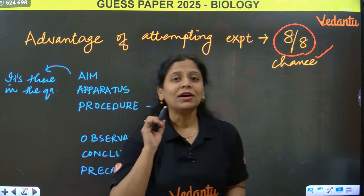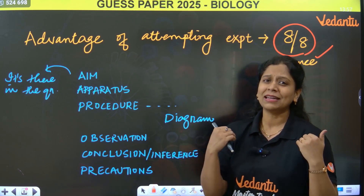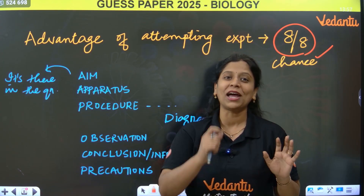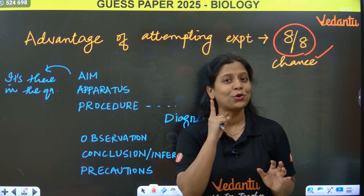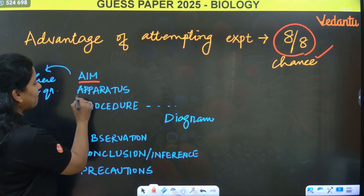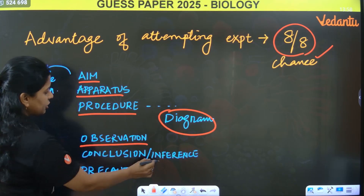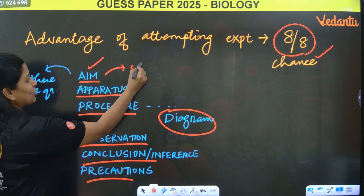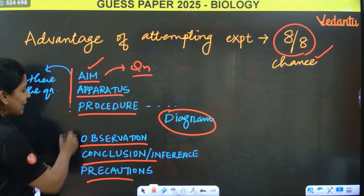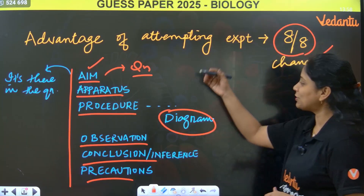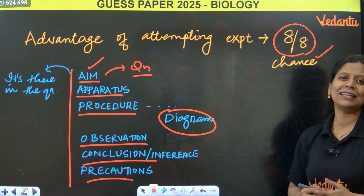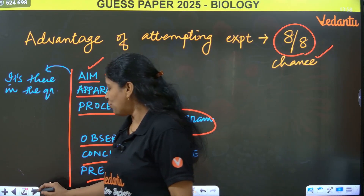Chances are high. If you write the experiment, you can easily score 8 by 8. Please attempt every question — don't leave any question unattempted. For an experiment question, just write: aim, apparatus, procedure, and related diagram, observation, conclusion, precautions. The aim is given in the question itself. Even if you don't know the experiment, please attempt it. Control and coordination — phototropism and chemical coordination in plants — this is a short 8-mark question for tomorrow's exam. Neuron structure, reflexes — may or may not be asked in 8 marks, but 4 marks will be asked for these two.